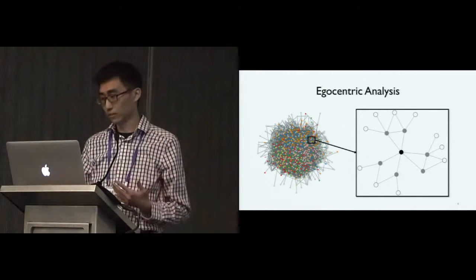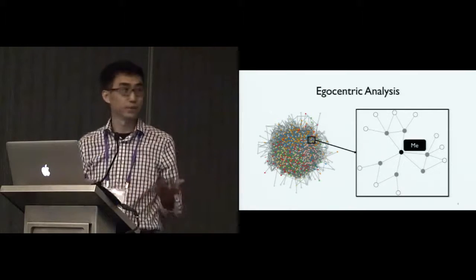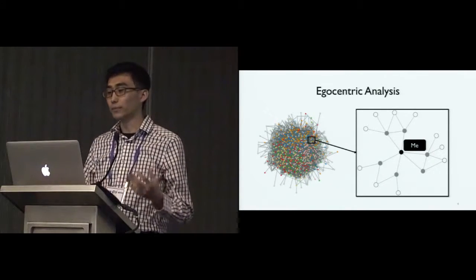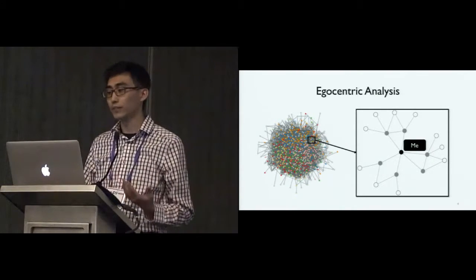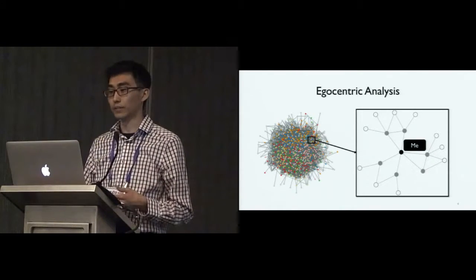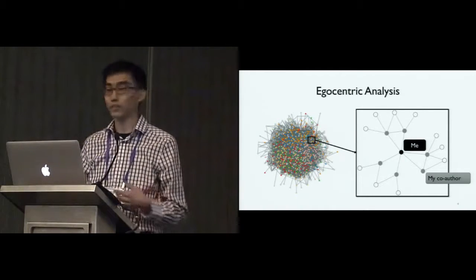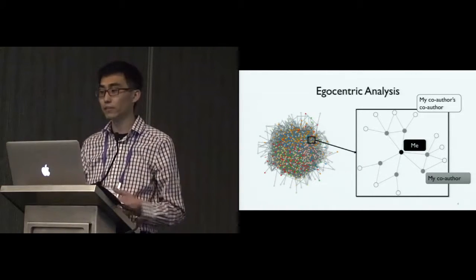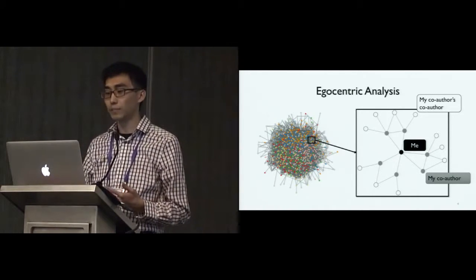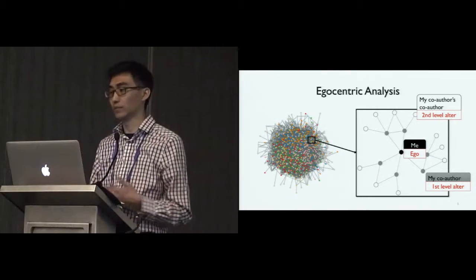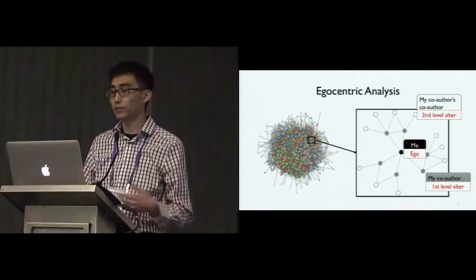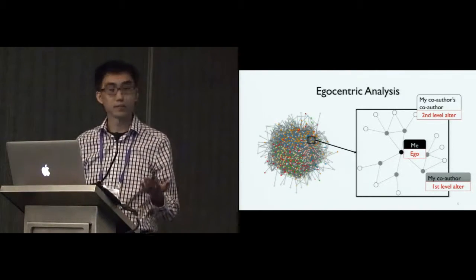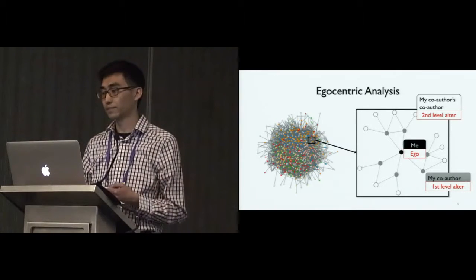For example, it could be me. In my co-authorship network — my ego network — it contains my co-authors, and my co-authors' co-authors. I am called the ego, that's why it's called the ego network, and my co-authors are called alters.